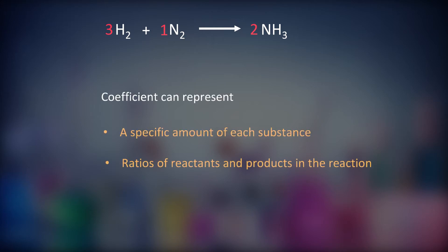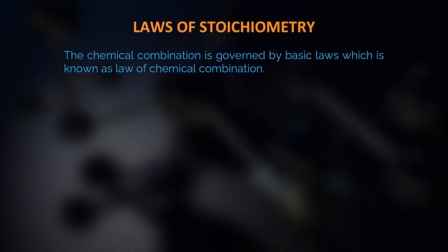Laws of Stoichiometry. Stoichiometry is used to calculate mass and volume, and different laws are used. The relationship is governed by basic laws which are known as the laws of chemical combination, or stoichiometry.